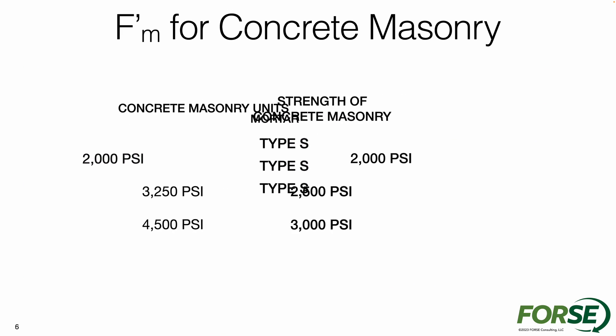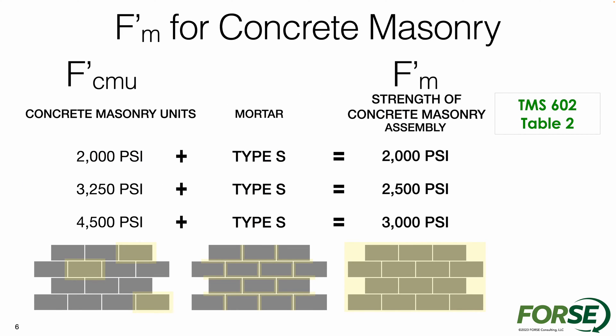I'm going to go ahead and shuffle these numbers around. On the left side I really want to look at what blocks I have — what are the block suppliers going to be giving me? When I define and understand what those blocks are going to be, then I can specify the type of mortar. Type S mortar for structural is typically what I would use. And then based on those two values, that's when I'll come up with my final design strength of masonry assembly — my F'M.